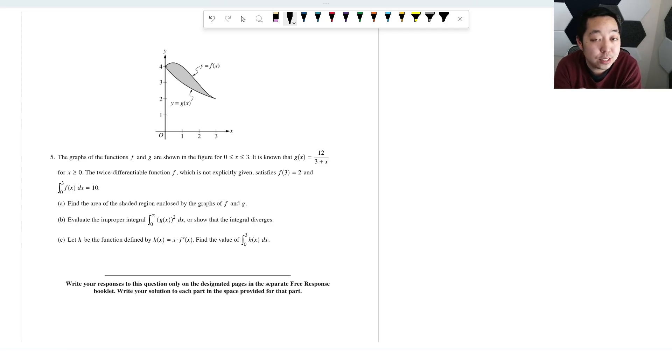If I have any corrections, I will put them in a pinned comment. The graph of the functions are given by this. The twice differentiable function is not explicitly given, satisfies F of three equals two. And this is true. Find the area of the shaded region enclosed by graphs of F of X. So for A,